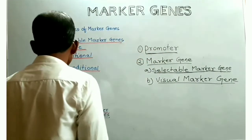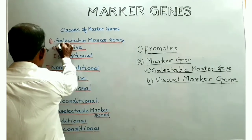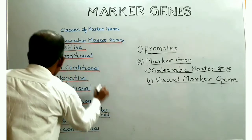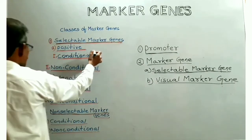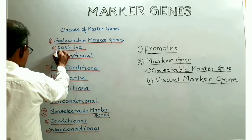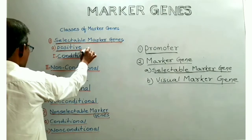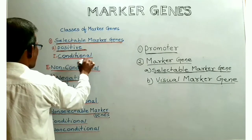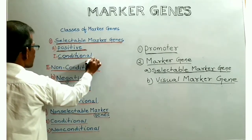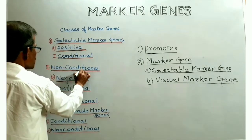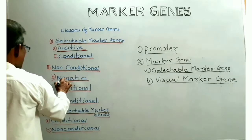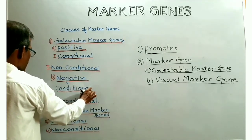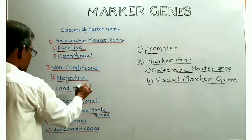Marker genes are divided into two main classes. One is selectable marker genes and the other class is non-selectable marker genes. Selectable marker genes are further divided into two subclasses: positive selectable marker genes and negative selectable marker genes. Positive selectable marker genes are further subdivided into conditional and non-conditional positive selectable marker genes. Negative selectable marker genes are similarly divided into conditional and non-conditional negative selectable marker genes.